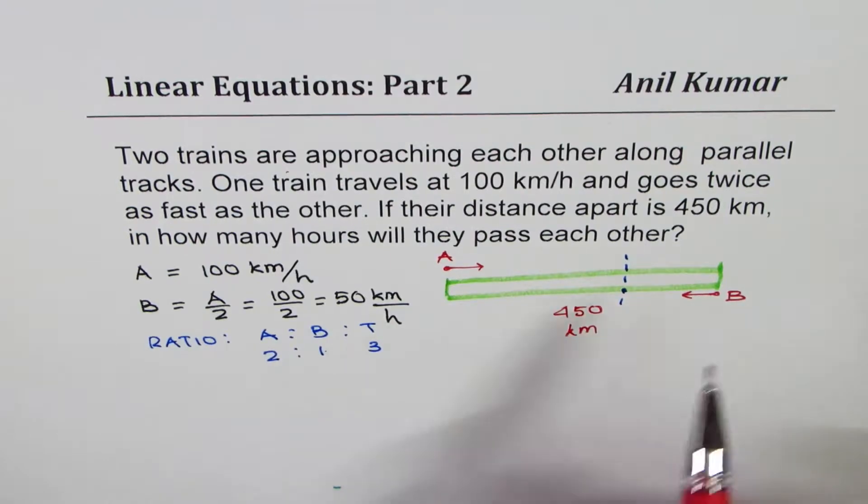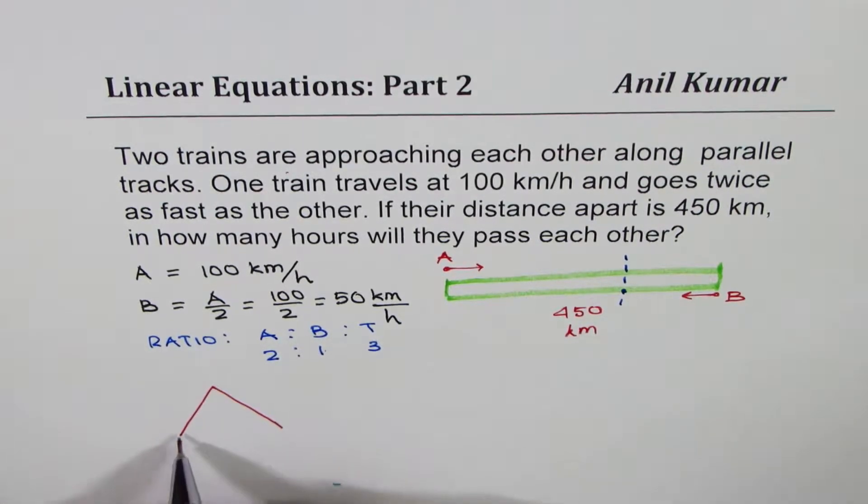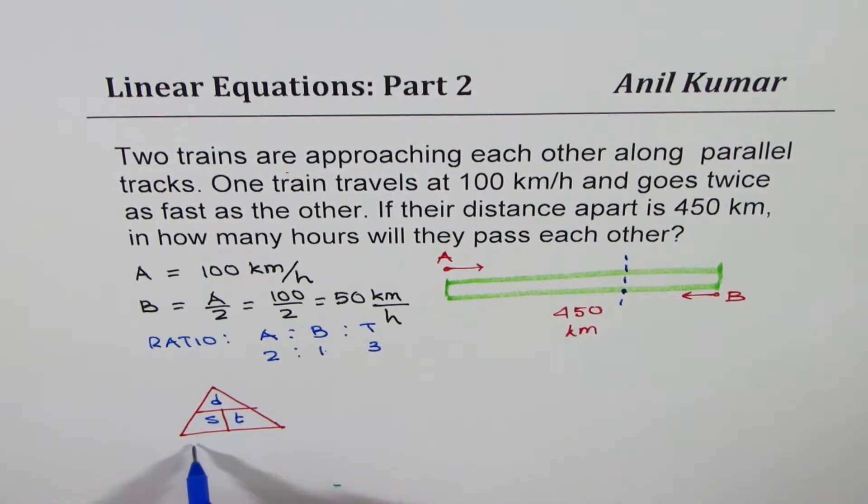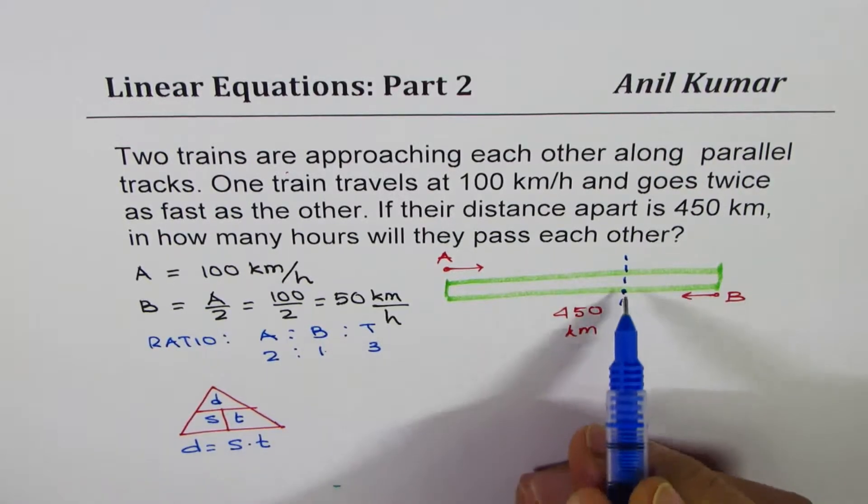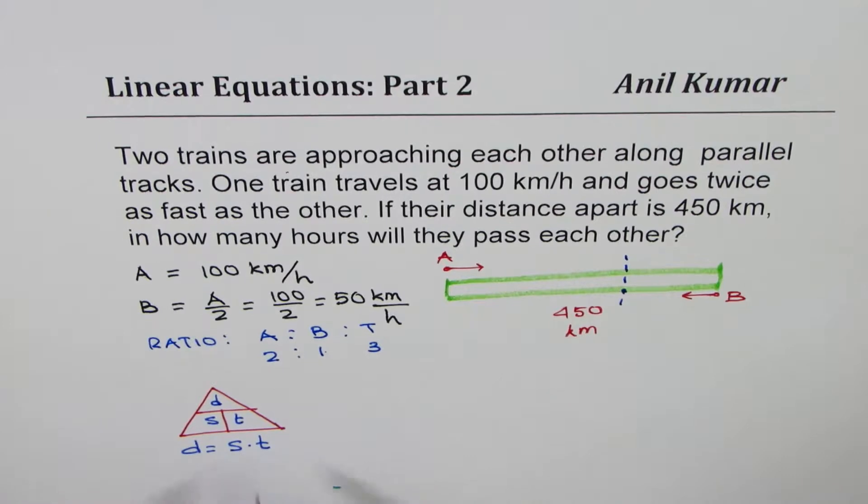Let's get back to our distance, speed, time concept. Let's understand a few concepts. That's the triangle we normally work with. Distance, speed and time. Distance is speed into time. So the time when they meet is same. So time is same for both.